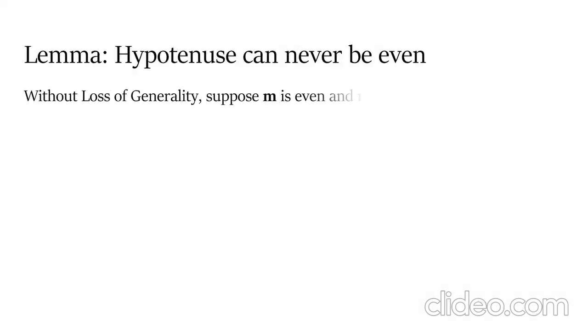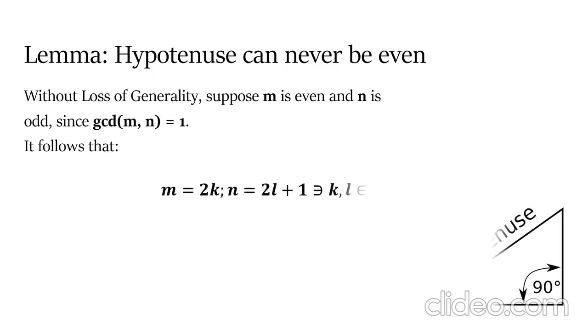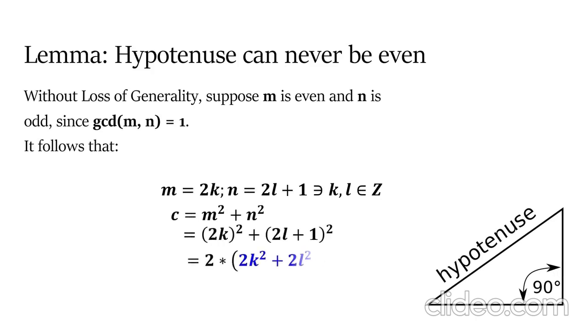The hypotenuse can never be even. Without loss of generality, suppose m is even and n is odd. It is clear that opposite parity integers are co-prime. It follows that m can be represented as 2 times some integer k, and n can be represented as 2 times some integer l plus 1.